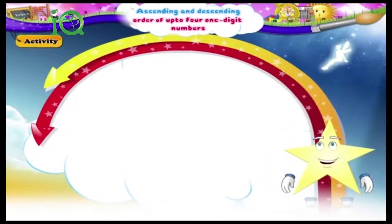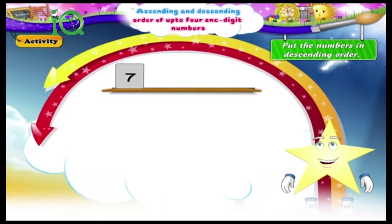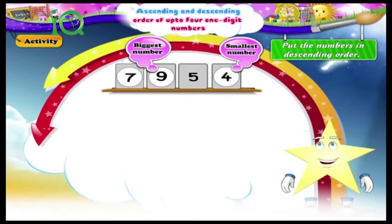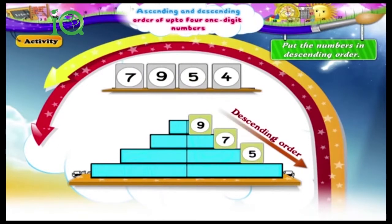And in this activity, Starry, we have to first circle the biggest number, then the smallest number, and then put the numbers in descending order. Let's begin. Seven, nine, five, four. The biggest number here is nine and the smallest number is four. Between seven and five, seven is the bigger number. The numbers arranged in descending order are nine, seven, five, four.